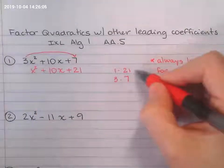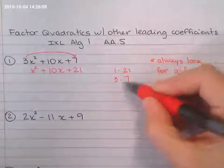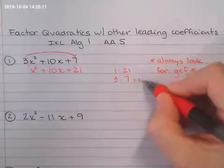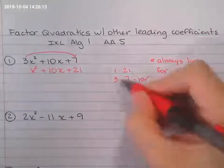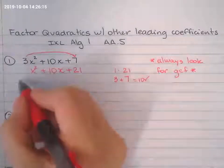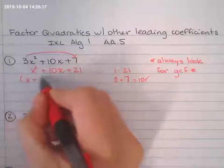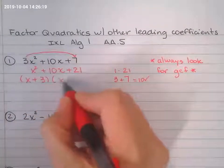1 plus 21 is 22. 3 plus 7 equals 10. So that's the one that I'm going to go with right here. 3 plus 7 equals 10. So x plus 3, x plus 7.